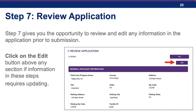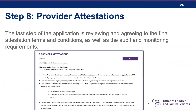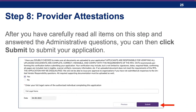Step seven gives applicants the opportunity to review and edit any information in the application prior to submission. Click the Edit button above any section if information requires updating. The last step is reviewing and agreeing to the final attestation terms and conditions, as well as the audit and monitoring requirements. Scroll down and carefully read all items under "As an Applicant of the Invest in New York Child Care Grant, I attest that." After carefully reading all items and answering the administrative questions, sign the application by typing your full legal name into the text entry field and click Submit.